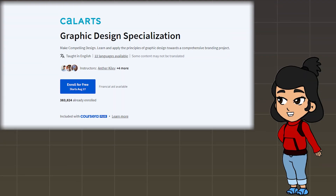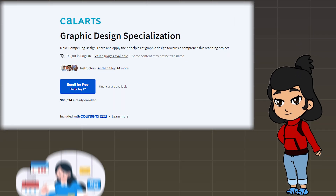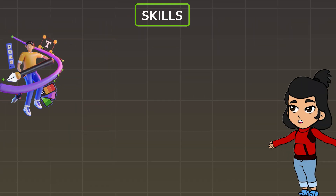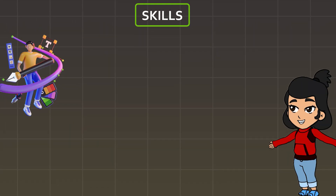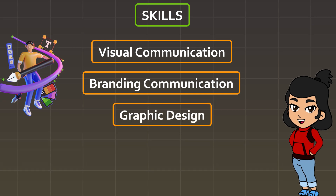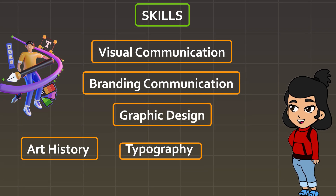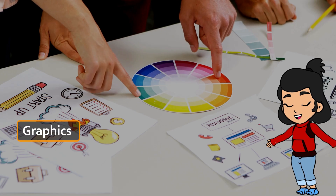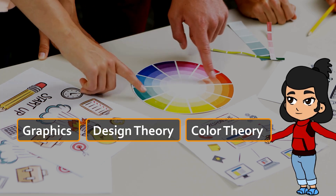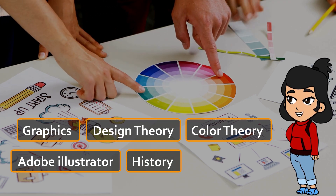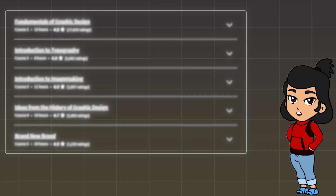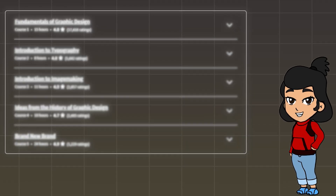the fundamental skills of a graphic designer, everything about motion graphics, editorial design, and interface design. At the end of this course you will do a capstone project which can be added to your portfolio. The skills you will gain include visual communication, branding, communication, graphic design, art history, typography, creativity, graphics design theory, color theory, Adobe Illustrator history, and Adobe InDesign.